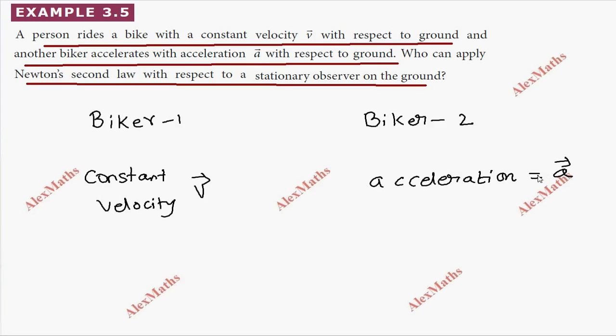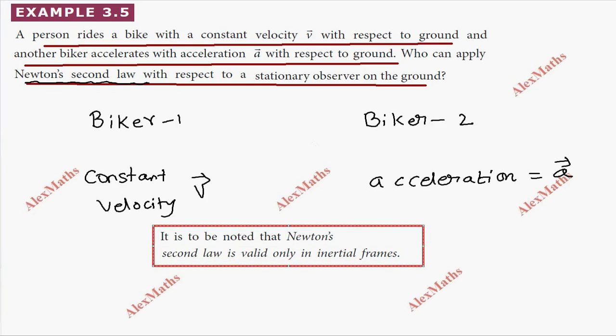Newton's second law is valid only in inertial frames. If you have constant velocity, you're in an inertial frame. The first biker has constant velocity, so he is in an inertial frame.